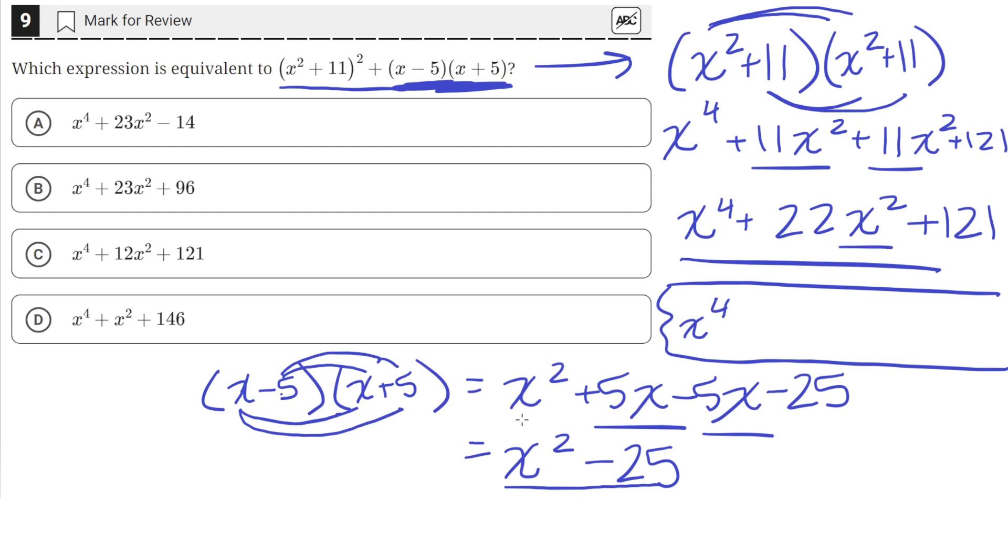Then we have this x squared, and this x squared. So we'll have 23x squared, and then 121 minus 25. That's just equal to 96.